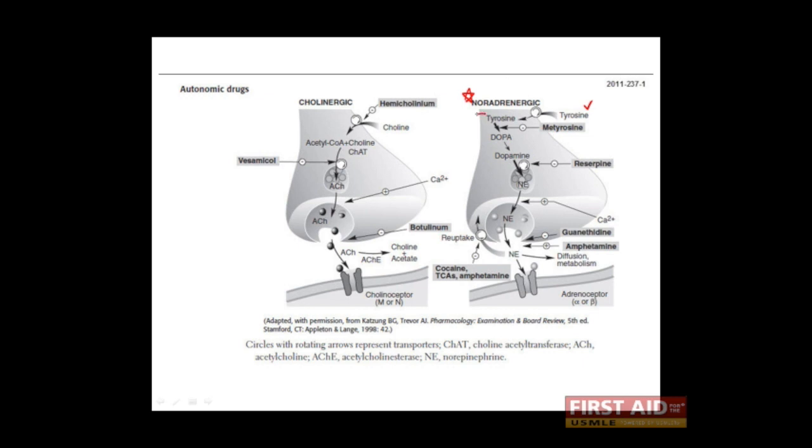Once inside, tyrosine can be converted to dopa, and dopa can then be converted into dopamine. Dopamine is then loaded into vesicles, where it can be converted into norepinephrine.